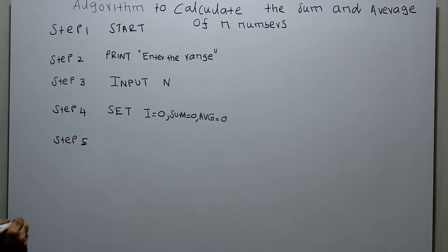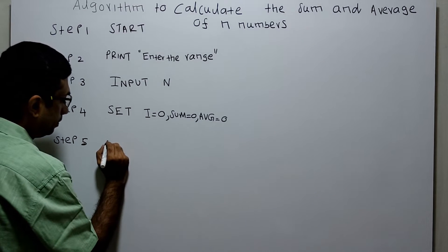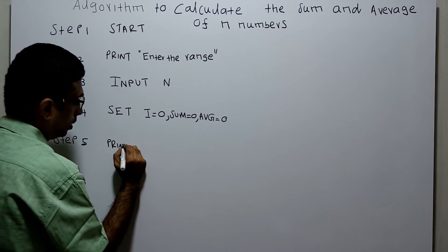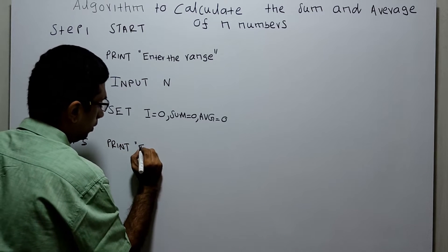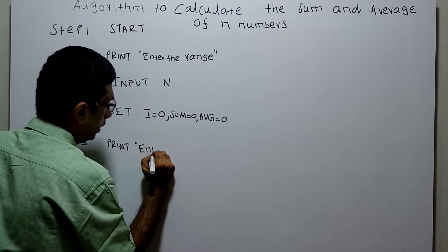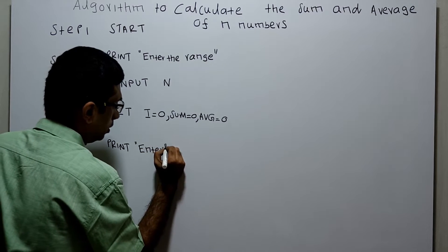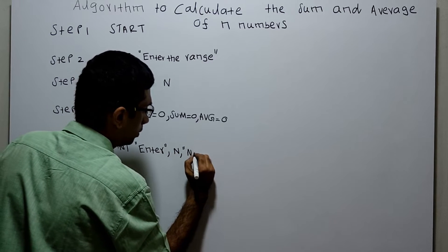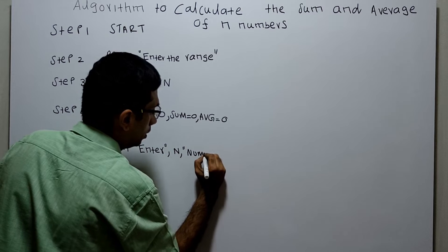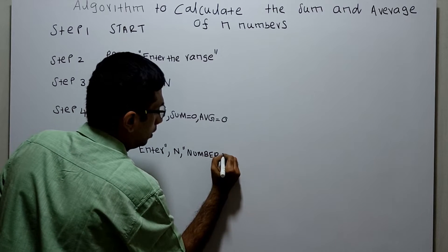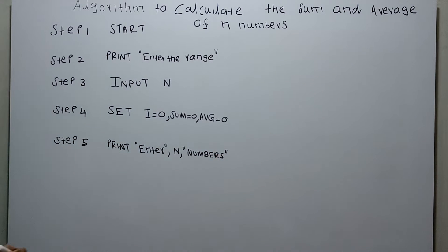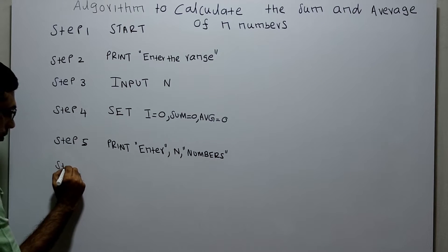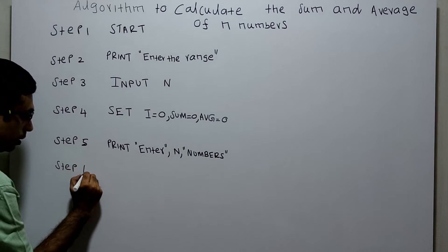Step 5: I ask the user — using a print statement — to enter n numbers. So I print 'enter n numbers'.